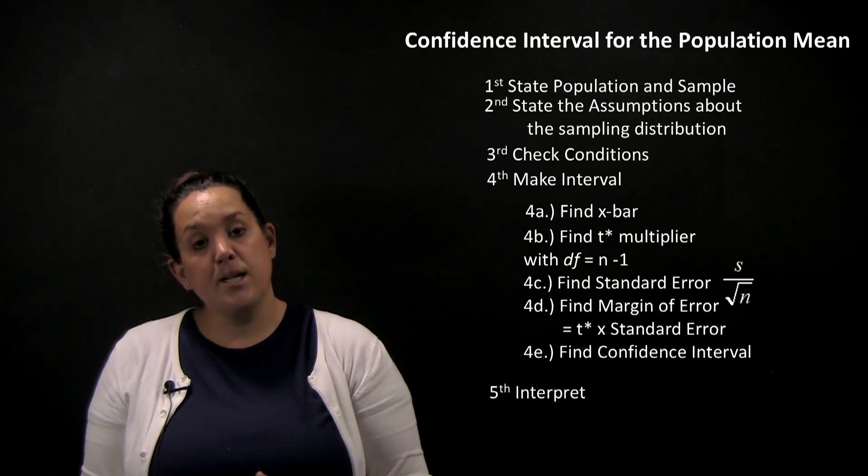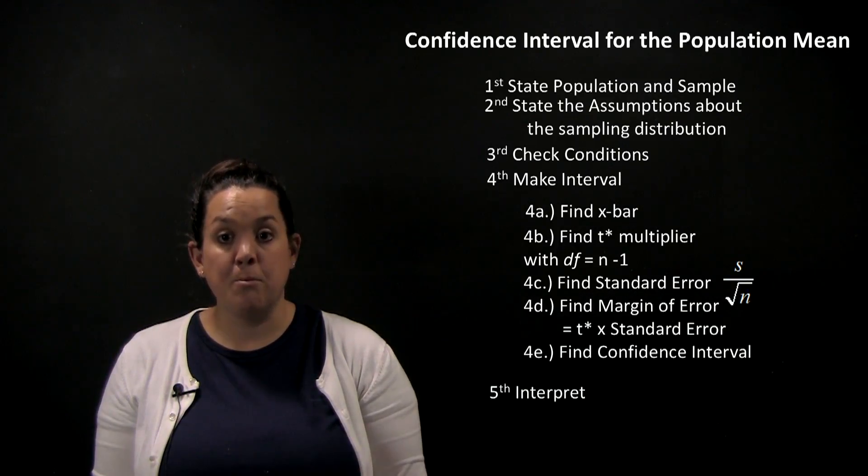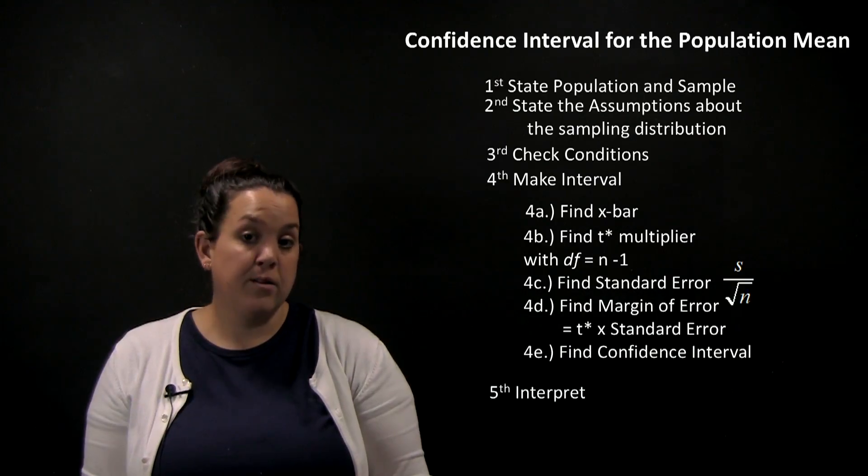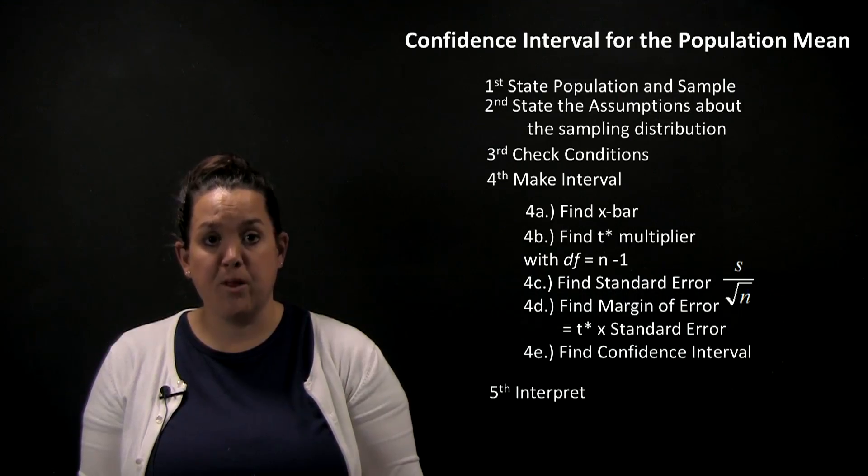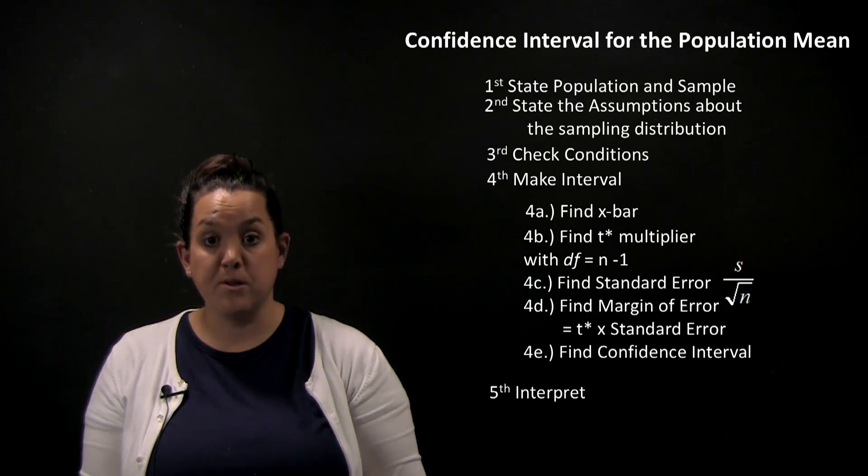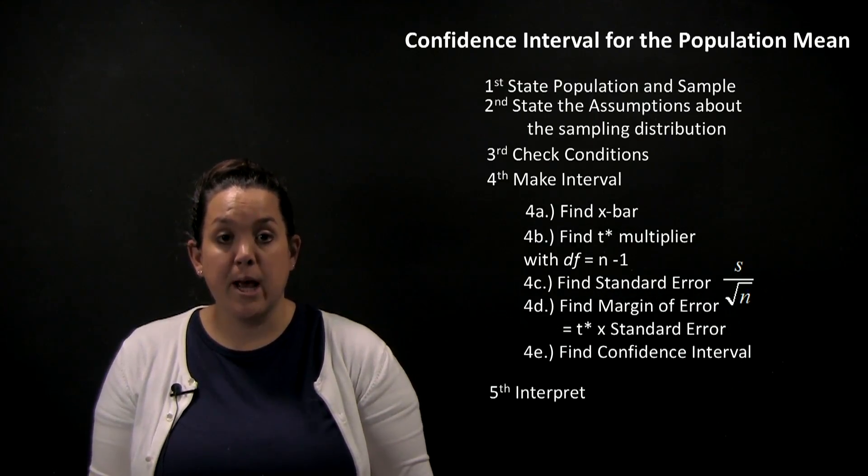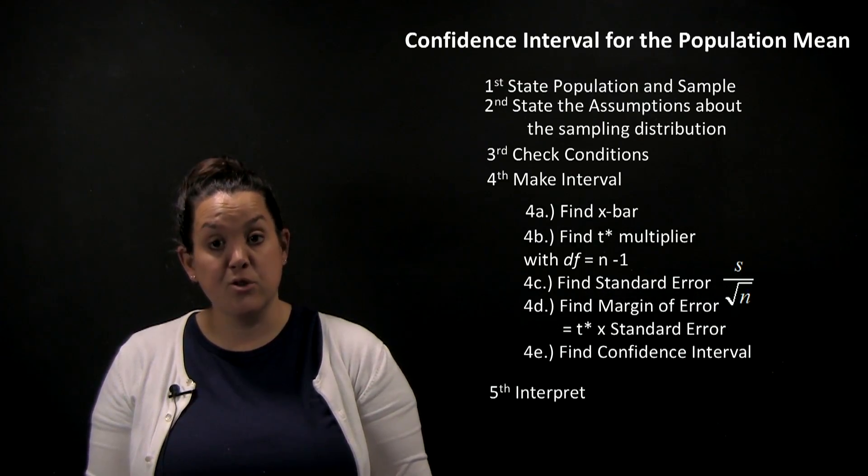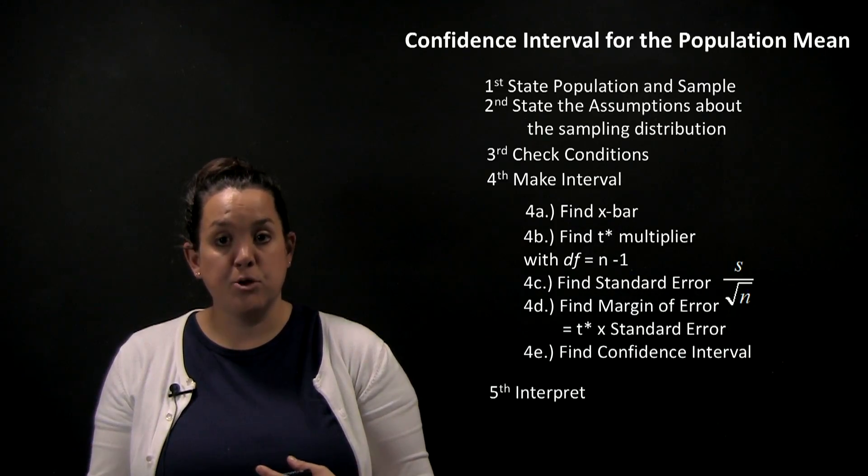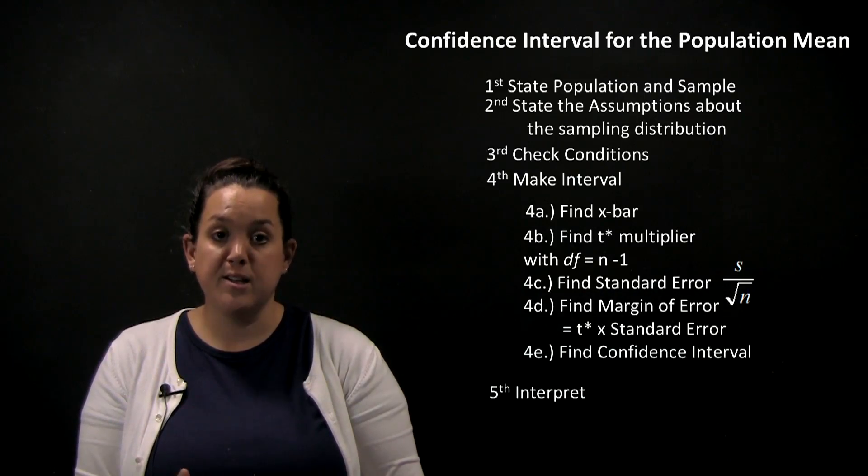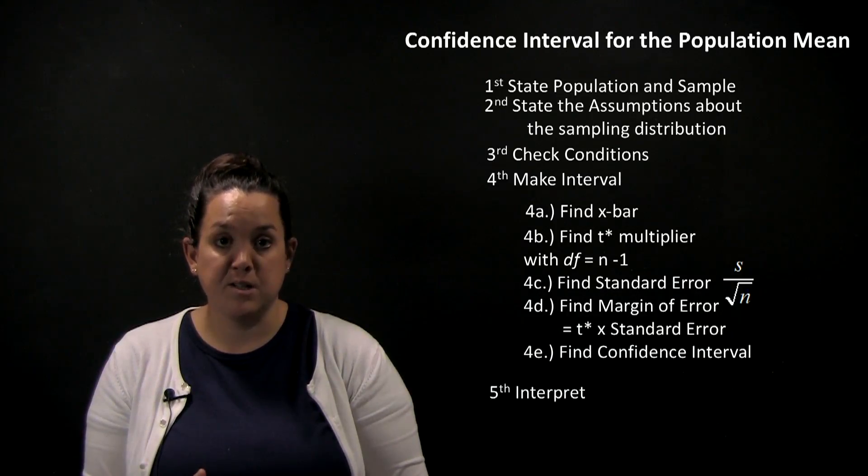The second step will be to state the assumptions about the sampling distribution. We now are using the sampling distribution of x-bar, and we learned some information about that sampling distribution that will help us to make these inferences. That information is that we're going to have to assume that the sampling distribution of x-bar has a normal distribution. Similar to what we learned in chapter 2, but now because our new sample estimate or our statistic is x-bar, our sampling distribution that we're talking about is x-bar.